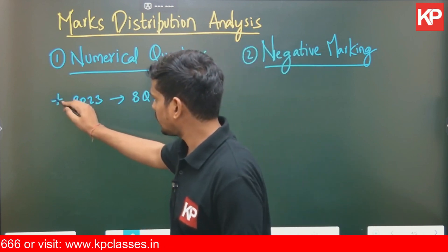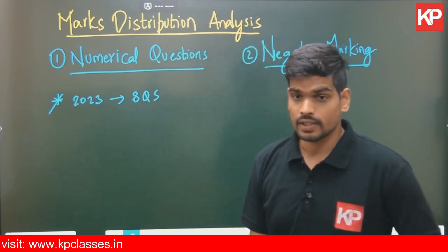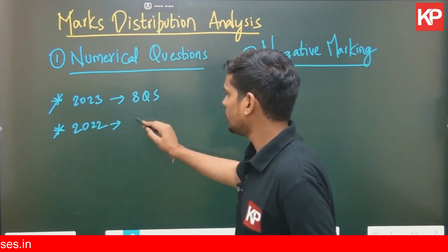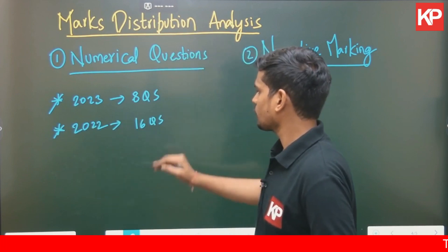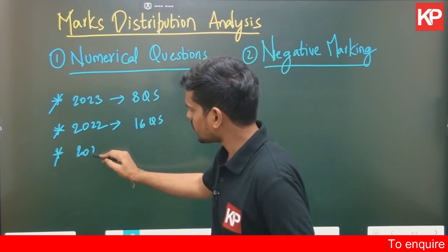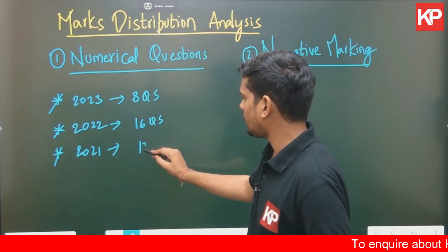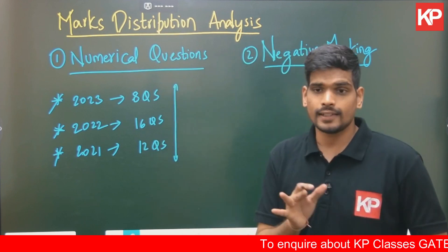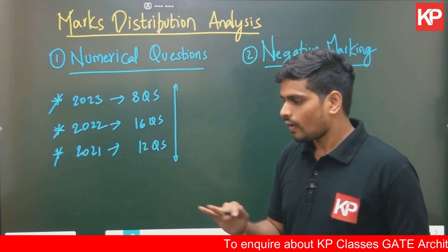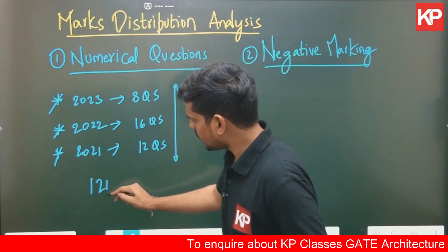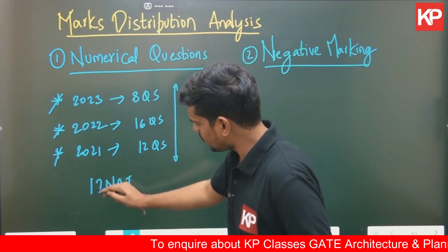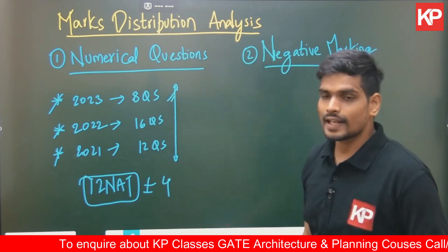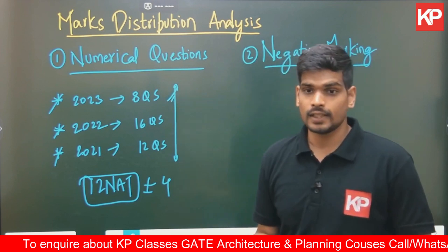In the 2022 question paper there were a huge number of numericals — 16 questions — and in 2021 the number of numericals was 12 questions. So you see there is no major shift or trend; there is always this deviation. On an average you will get 12 Numerical Answer Type questions — that's the average number.